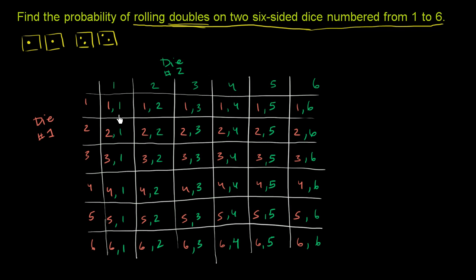Every one of these represents a possible outcome. For example, this outcome is where we roll a 1 on the first die and a 1 on the second die; this is where we roll a 3 on the first die and a 2 on the second die; this is where we roll a 4 on the first die and a 5 on the second die. You can see there are 36 possible outcomes — 6 times 6. Now, how many of these outcomes satisfy our criteria of rolling doubles on two 6-sided dice?